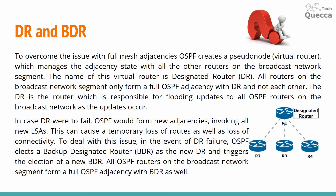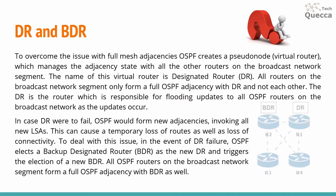In case the DR were to fail, OSPF would form new adjacencies invoking all new LSAs, which can cause a temporary loss of routes as well as loss of connectivity. To deal with this issue, OSPF elects a Backup Designated Router, BDR. The BDR becomes the new DR upon failure and triggers the election of a new BDR. All OSPF routers on the broadcast network segment form a full OSPF adjacency with the BDR as well.